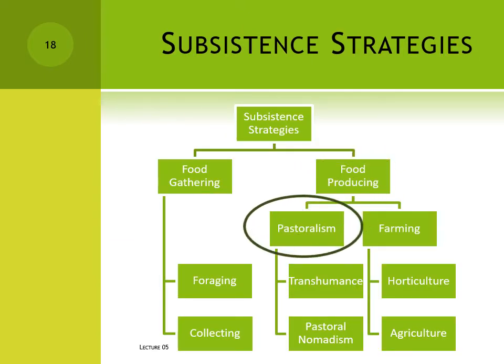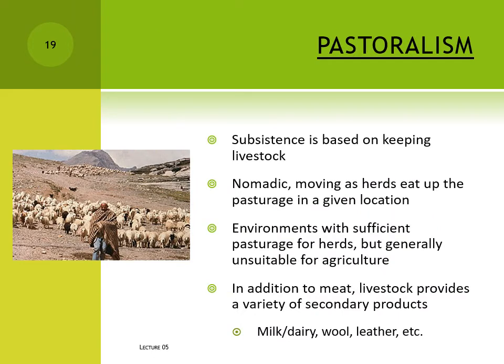I'll deal with pastoralism first. Pastoral groups are generally nomadic, moving their residences as they move their herds in search of grass and water. They tend to inhabit environments that have adequate grass to feed the herds but are otherwise unsuitable for agriculture – either the landscape is too dry, too hot, or too cold to allow for efficient growing of crops. Instead, people keep large herds of livestock, which are able to move around the landscape following water sources, unlike crops to which water must be brought.